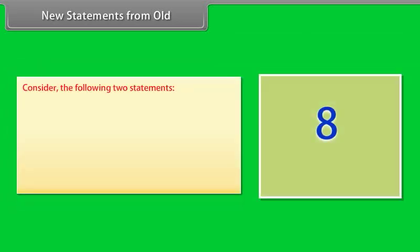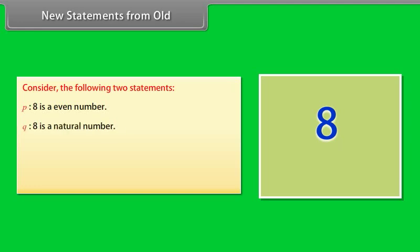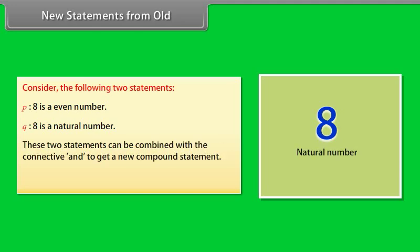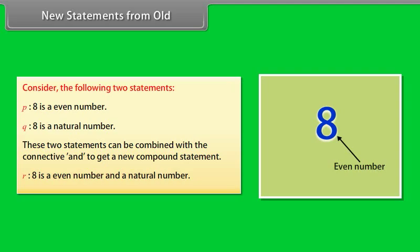Consider: P — 8 is an even number; Q — 8 is a natural number. These two statements can be combined with the connective AND to get the new compound statement R: '8 is an even number and a natural number.'